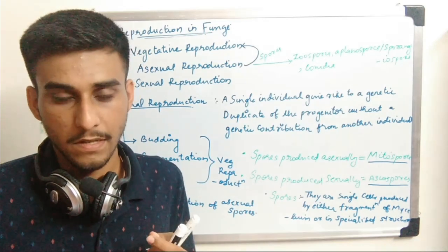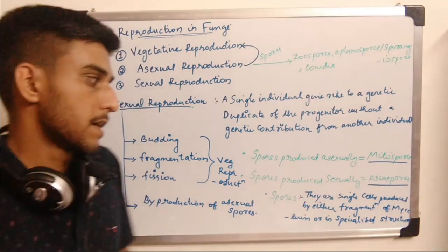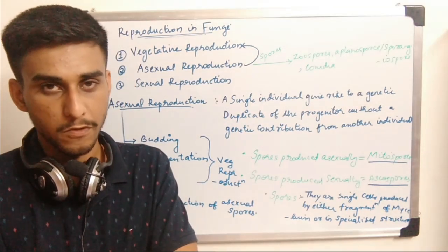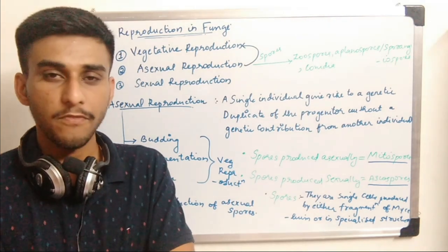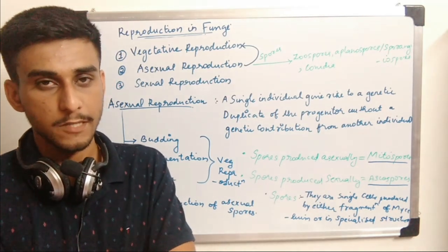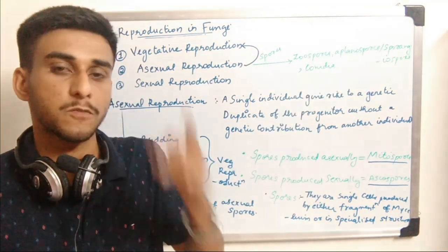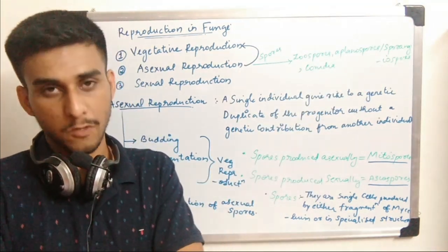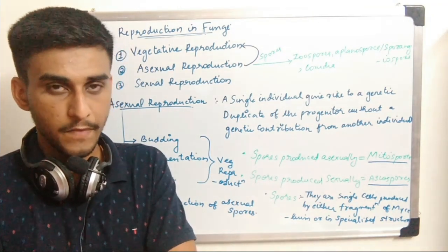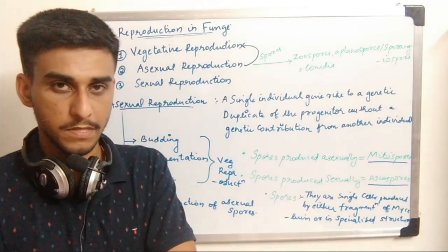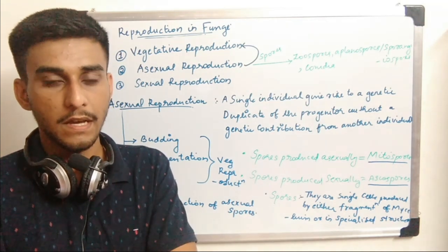Fungi can produce spores asexually and also sexually. If a fungus produces spores asexually, then the spores are known as mitospores. A mitospore is a spore which is produced mitotically.